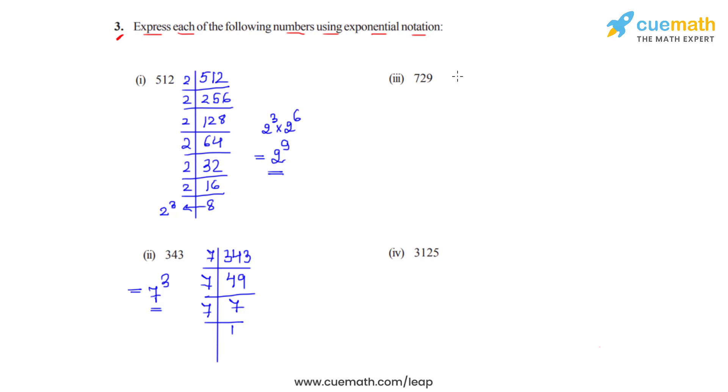Coming to the third bit which is 729. Let's prime factorize it. So we'll be dividing it by all the possible prime numbers by which it is divisible. We'll take 3 first. Dividing 729 by 3 gives us 243.